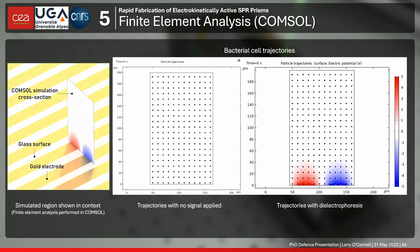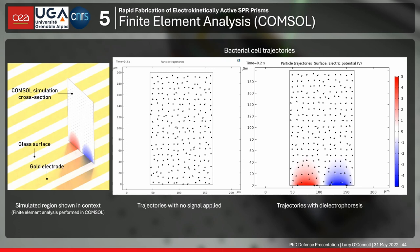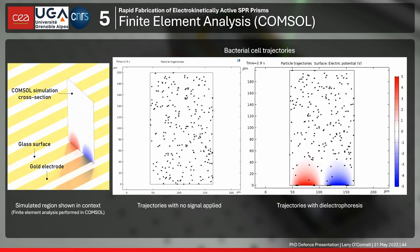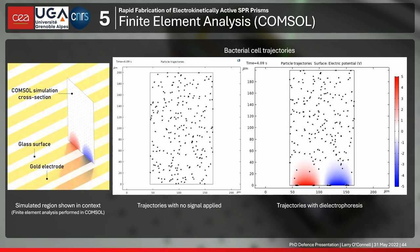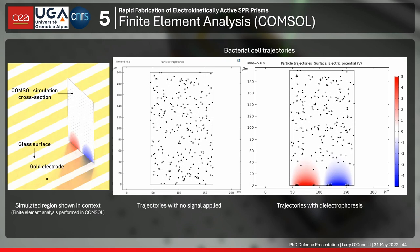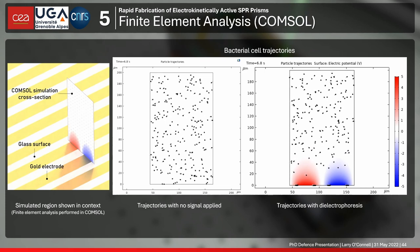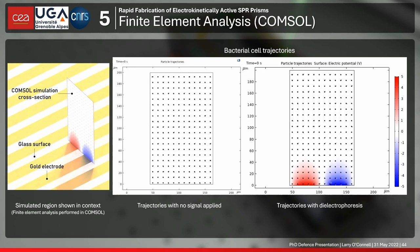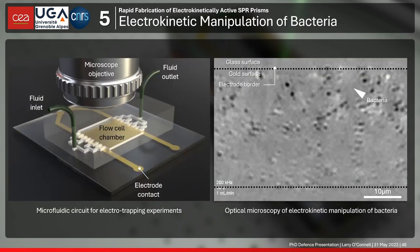What you can see is that quite quickly — within a couple of seconds — the bacteria are attracted from the solution and there's a depleted region in the first tens of micrometers above the surface. This allows us to facilitate interactions between bacteria and what is on the surface — for a given bacterial concentration, you'll get far more interaction between bacteria and the surface compared to random bacteria bumping into it without any electrokinetic signal.